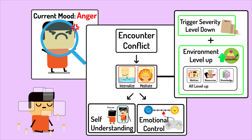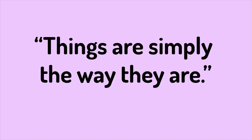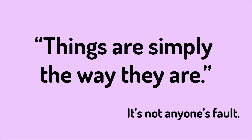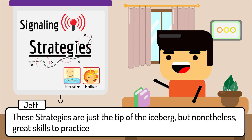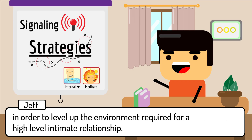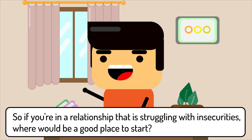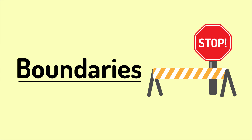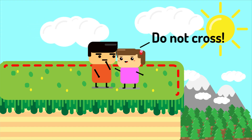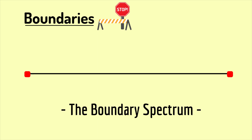Keep in mind, things are simply just the way they are, and it's not anyone's fault. These strategies are just the tip of the iceberg, but nonetheless great skills to practice in order to level up the environment required for a high-level intimate relationship. So if you're in a relationship struggling with insecurities, where would be a good place to start? I like to start with a discussion over boundaries — what you and your partner consider as cheating or stepping over the line.